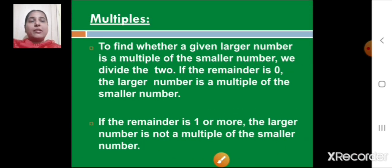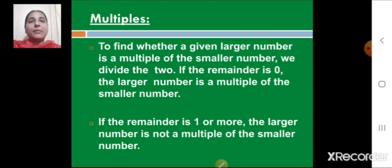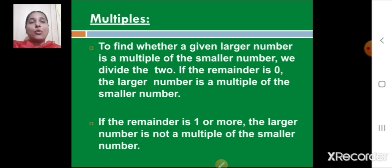To find whether a given larger number is a multiple of a smaller number, we divide the two. If the remainder is 0, the larger number is a multiple of the smaller number. But if the remainder is 1 or more, the larger number is not a multiple of the smaller number.